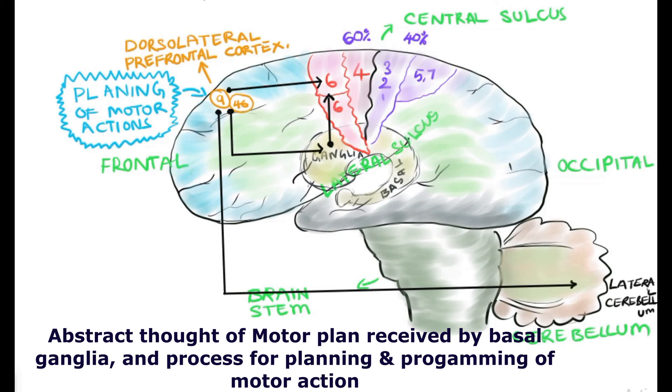Whereas the lateral cerebellum also receives some copy of the information from the motor cortex as well as from the planning area, number 9 and 46, and sends the information back to the motor cortex.